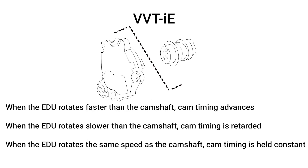When the electric motor rotates faster than the camshaft, the cam timing advances. When the electric motor rotates slower than the camshaft, cam timing is retarded. When the electric motor rotates the same speed as the camshaft, cam timing is held constant.